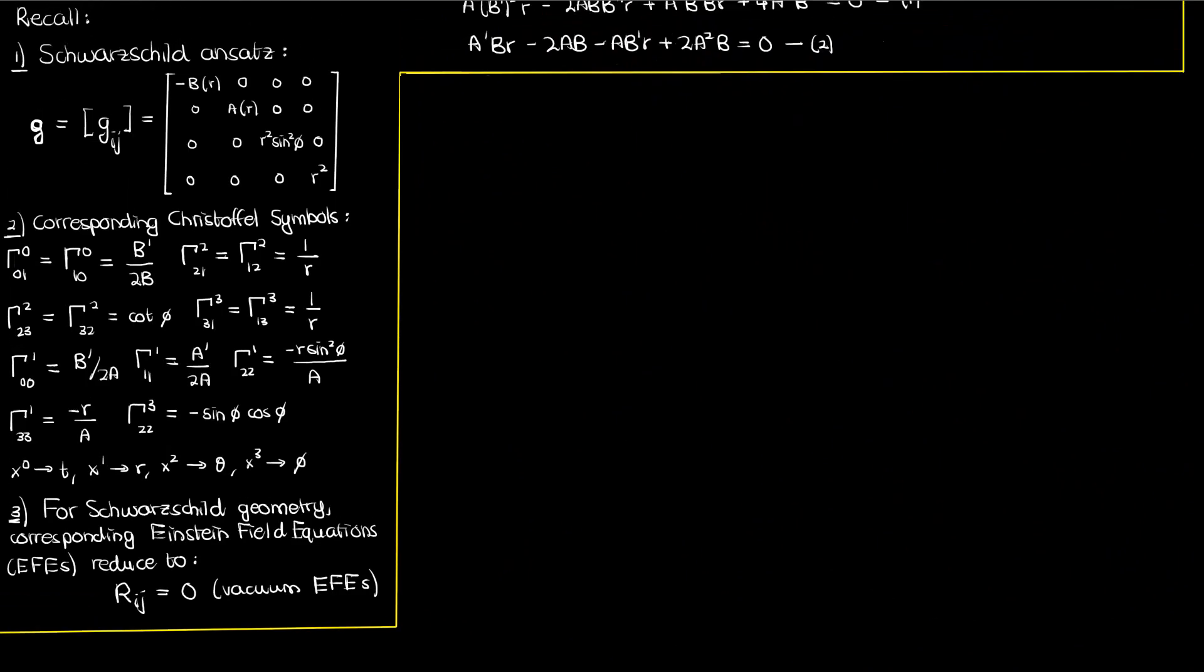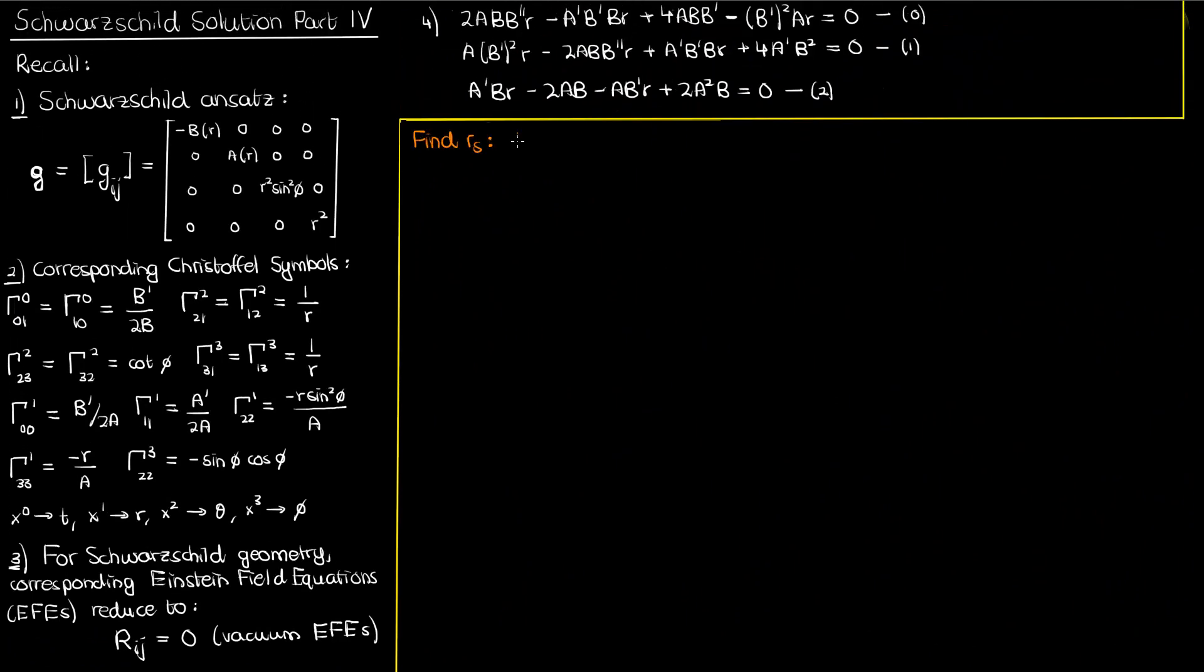We're almost done because now we just have to find the value of this integration constant R_S. This is a bit tricky because there's no initial or boundary conditions we can explicitly plug in to get our R_S. We have to use some principles of physics, particularly the limit of classical physics, to get our value for R_S.